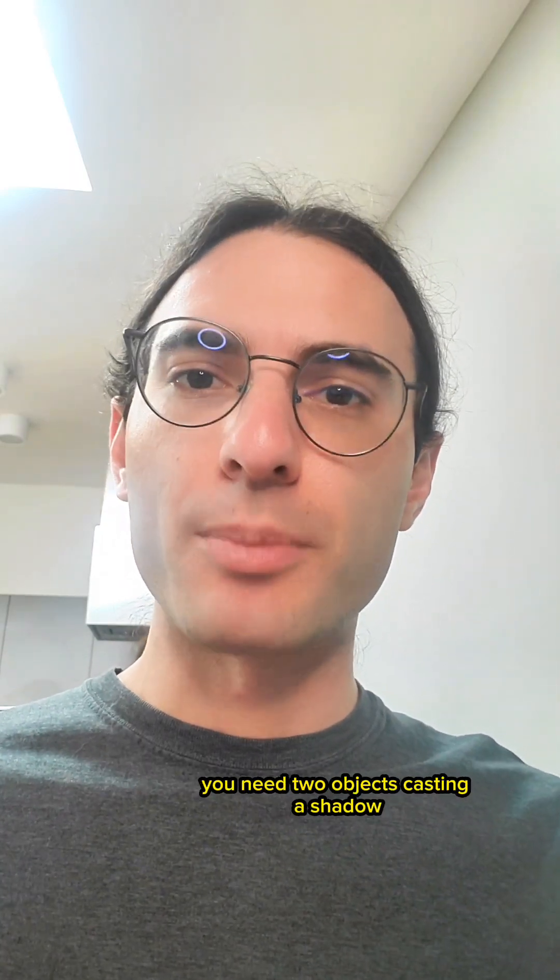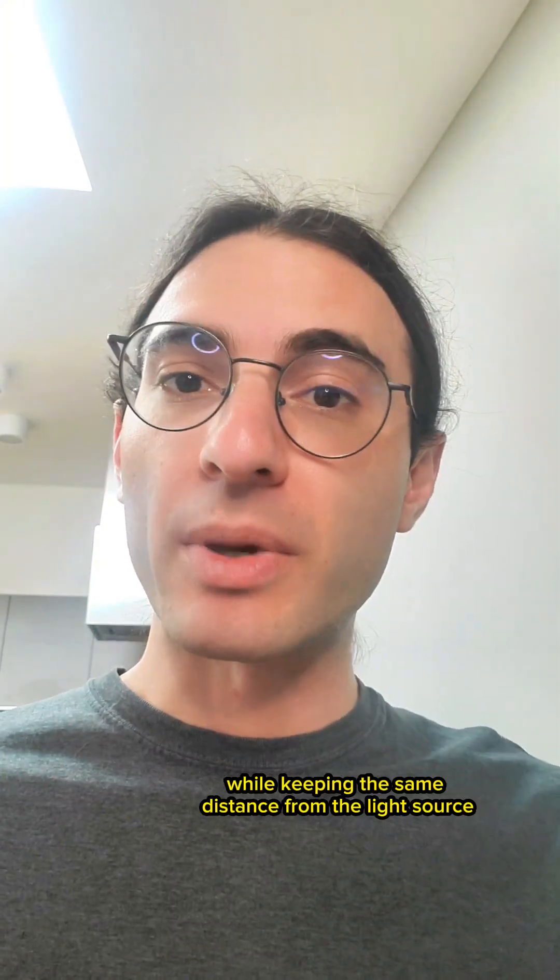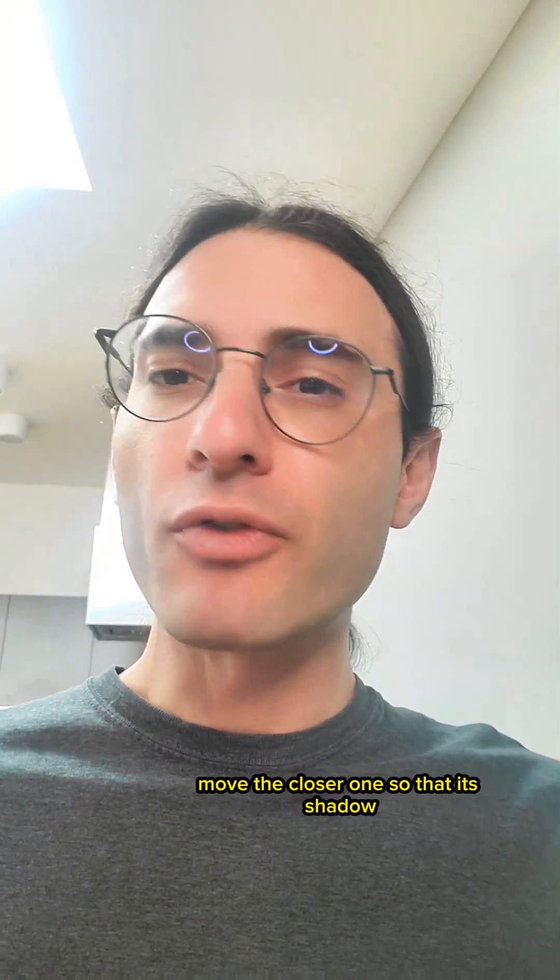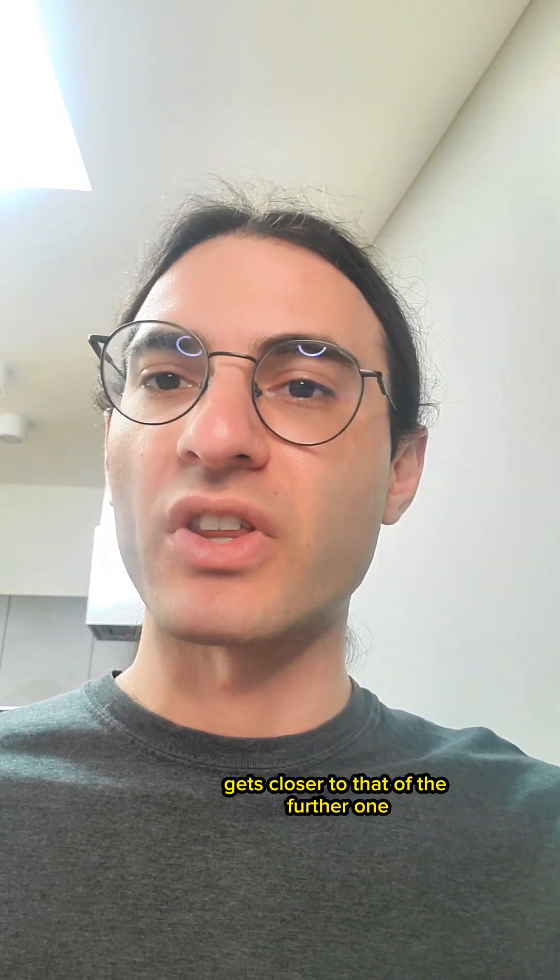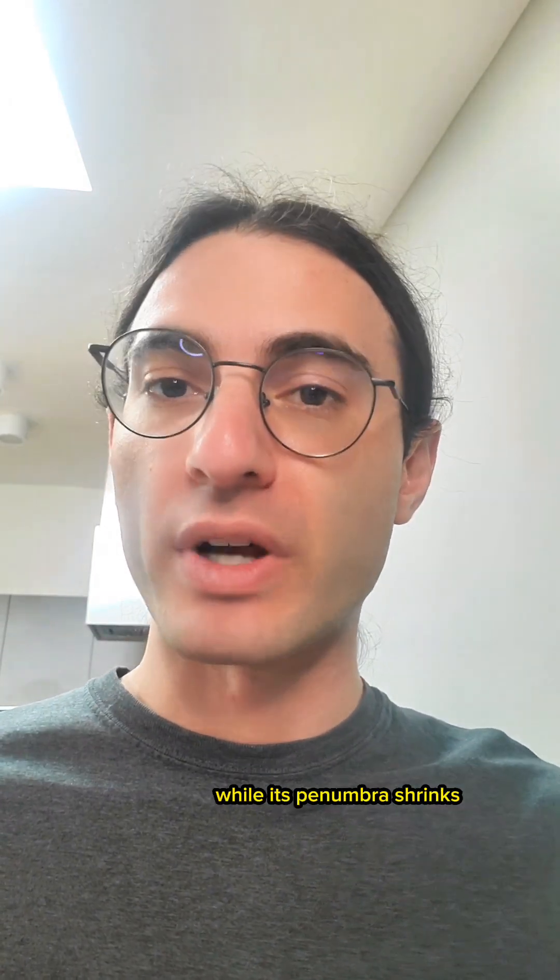Now, to create a shadow blister you need two objects casting a shadow, one closer to the light source and one further. Then, while keeping the same distance from the light source, move the closer one so that its shadow gets closer to that of the further one. This will make the umbra of the further one grow while its penumbra shrinks.